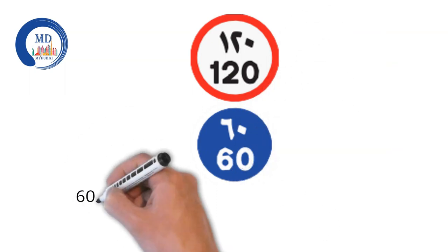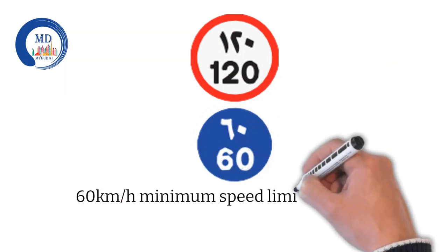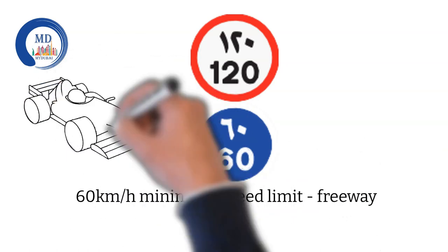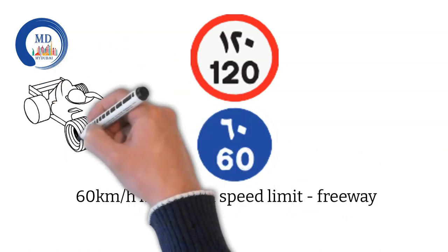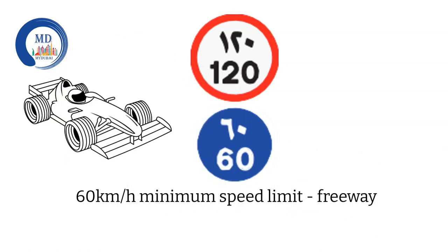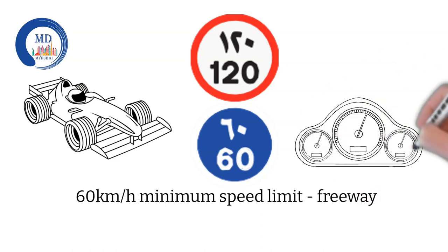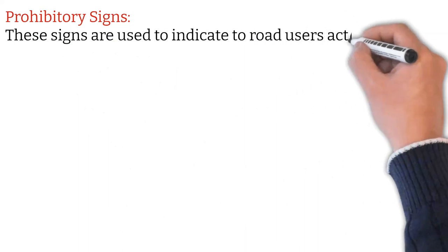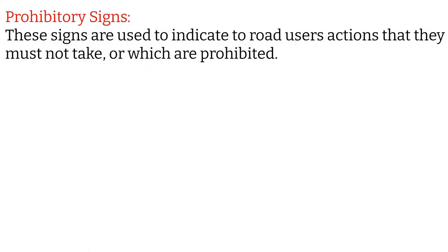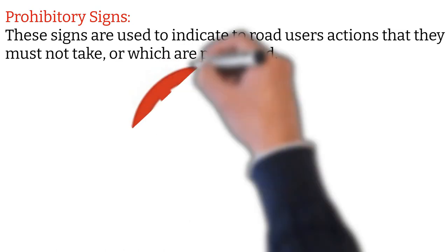These signs you will usually see on a freeway. This sign means the minimum speed on the road is 60 kilometers — when you are driving on a freeway you cannot drive below the speed of 60, so this is something you must follow. The next one is the maximum speed limit sign.